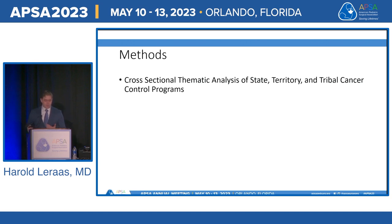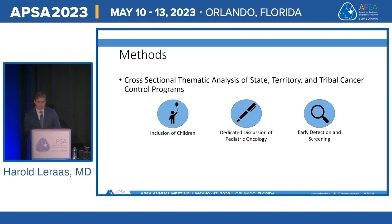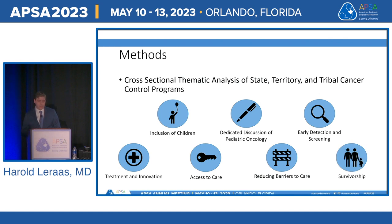With knowledge of the importance of cancer control plans in setting public health policy agendas and directing CDC funding, we conducted a cross-sectional thematic analysis to assess inclusion of pediatric oncology. We assessed inclusion of children at large, dedicated discussion of pediatric oncology, early detection and screening programs for pediatric malignancy, cancer care and care innovation, access to care, reducing barriers to care, and childhood cancer survivorship programs.